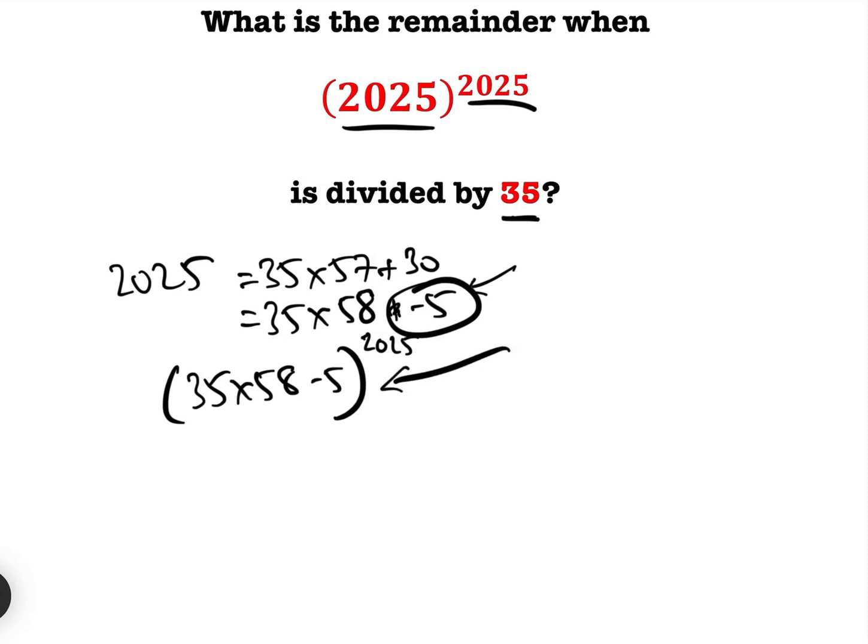Now when we expand this using the binomial expansion, all of these terms will be multiples of 35, and therefore we can ignore them when we're looking to decide what the remainder is when we divide by 35. So the only thing that we will be interested in here is the final term, which will be minus 5 to the power of 2025.